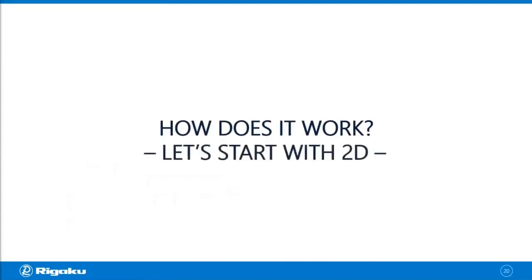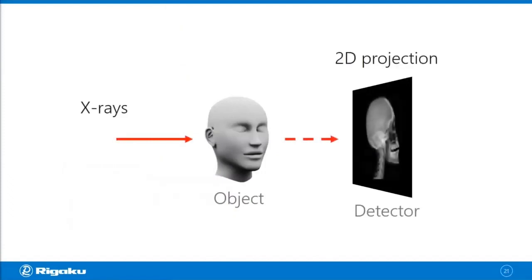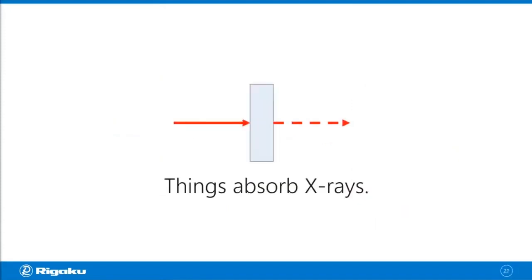Before we get into the 3D imaging, I would like to start with 2D. You have an object and put a 2D detector. If you put X-rays through this object, you get a 2D projection on the detector, and this happens because things absorb X-rays and different things absorb X-rays differently.